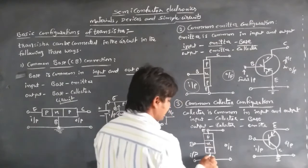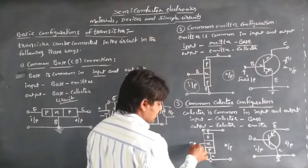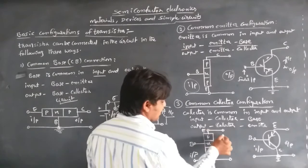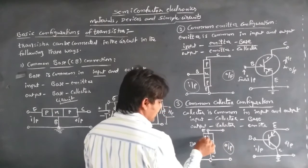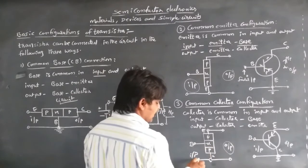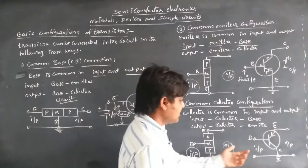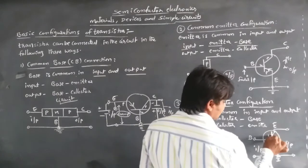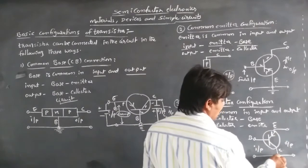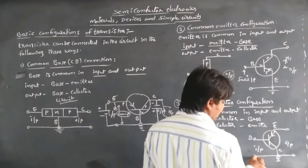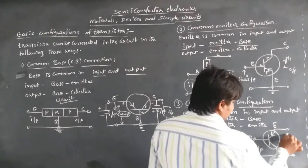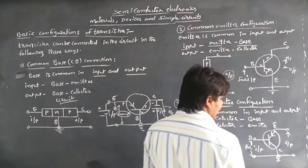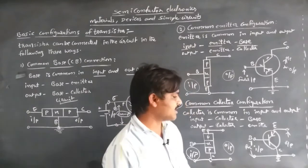In the common collector configuration using a PNP transistor, the base and collector junction receives the input, and the output is taken between the emitter and collector junction. In the circuit diagram, the collector is connected to both input and output, with a small forward bias and a high reverse bias on the emitter-collector junction, allowing current to flow.